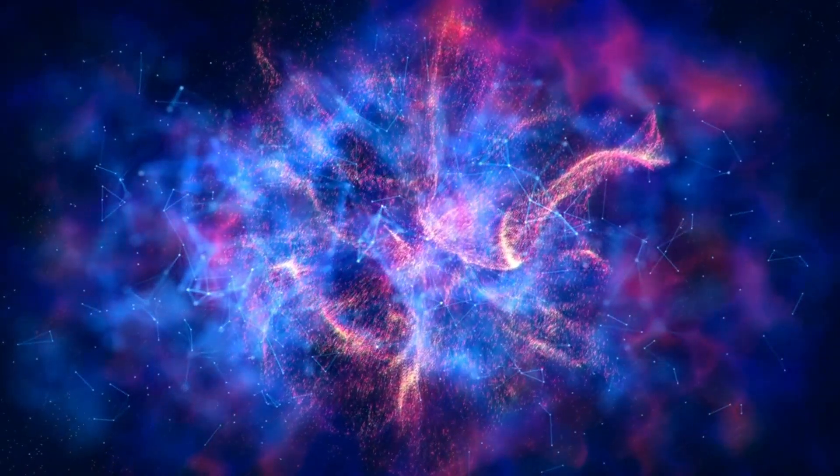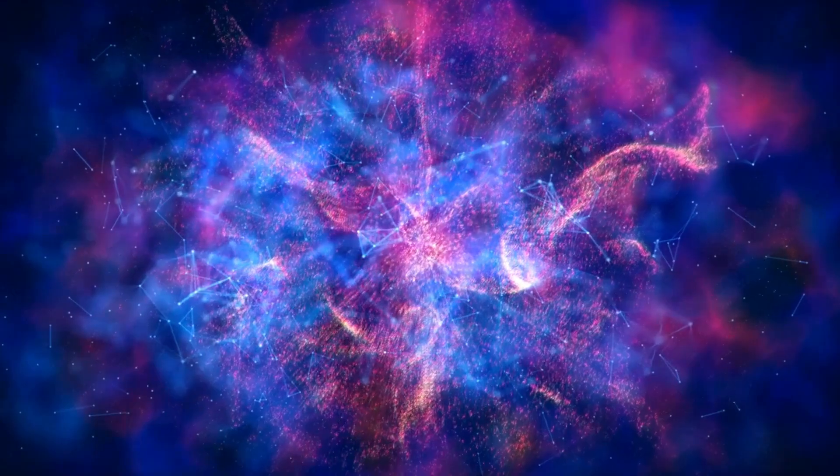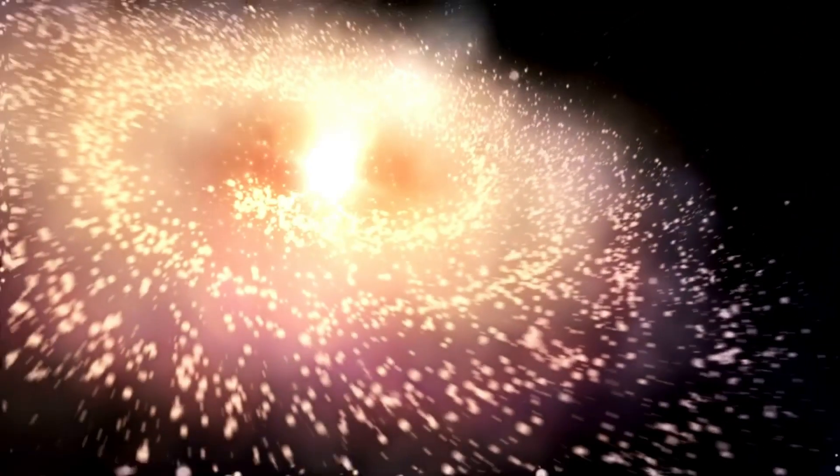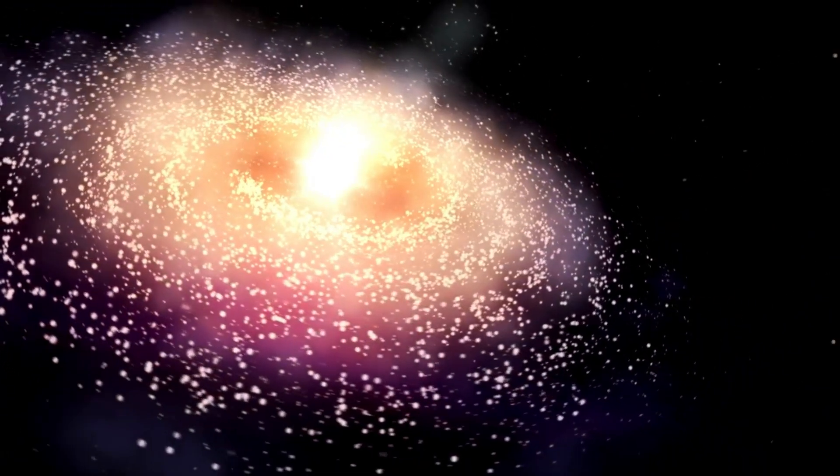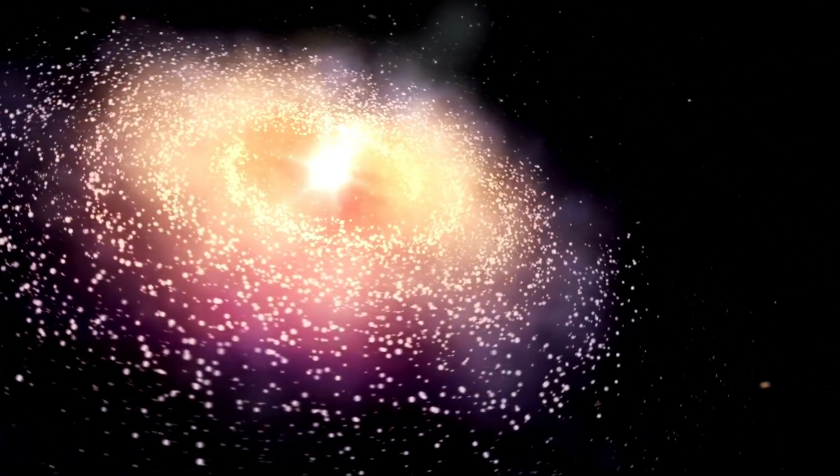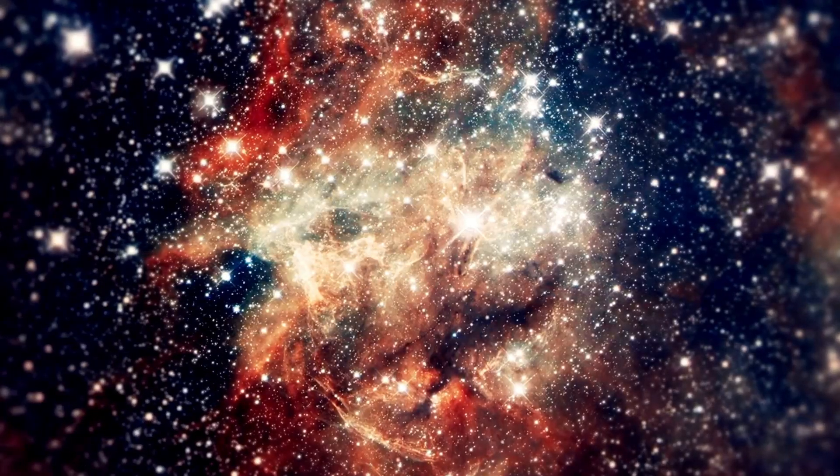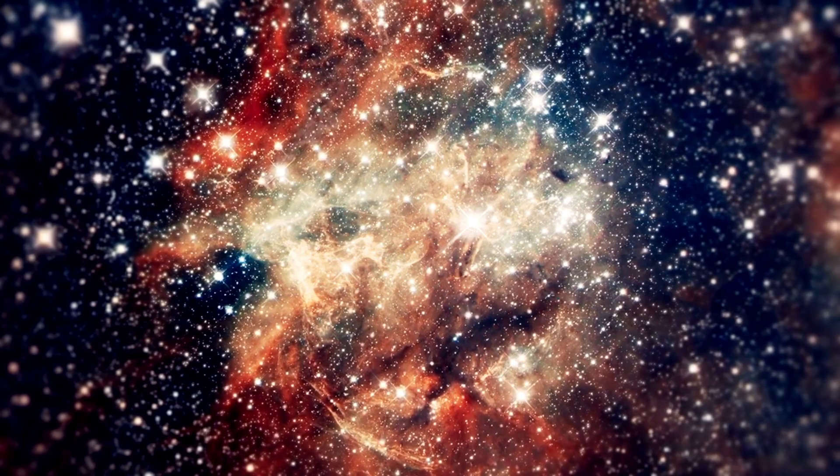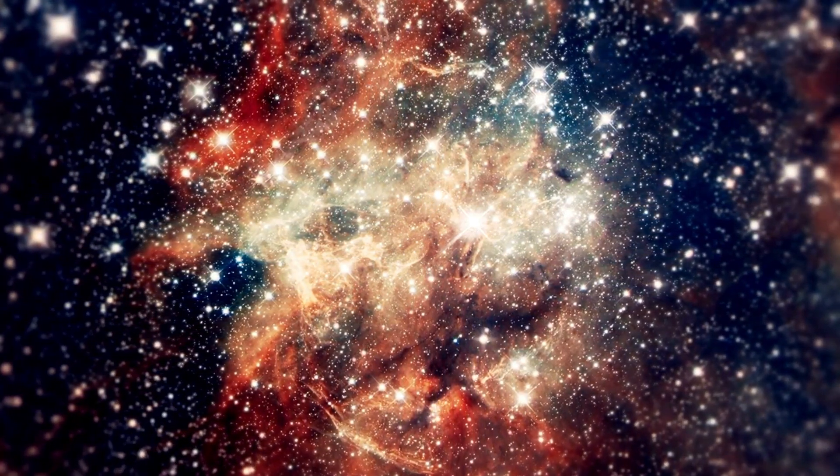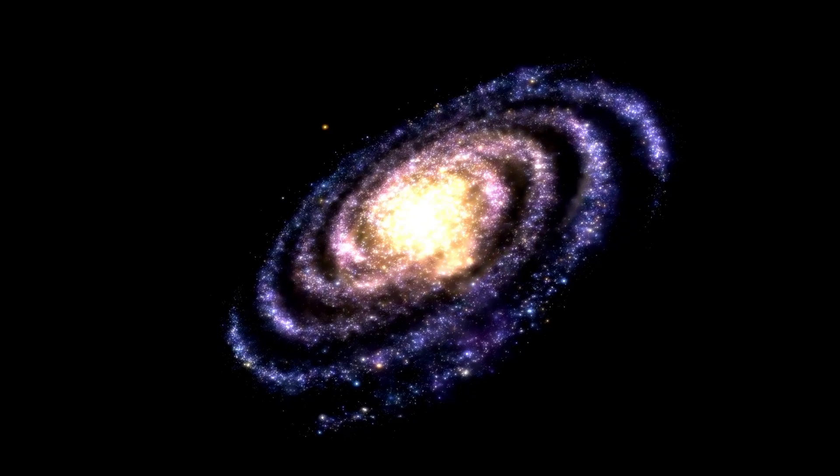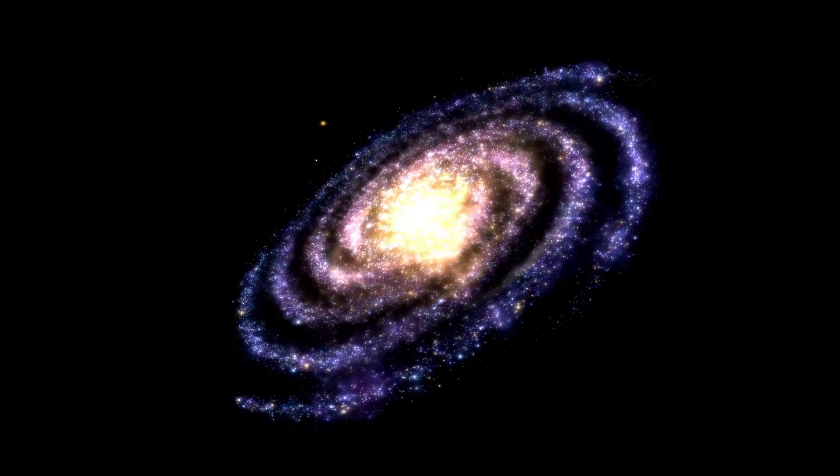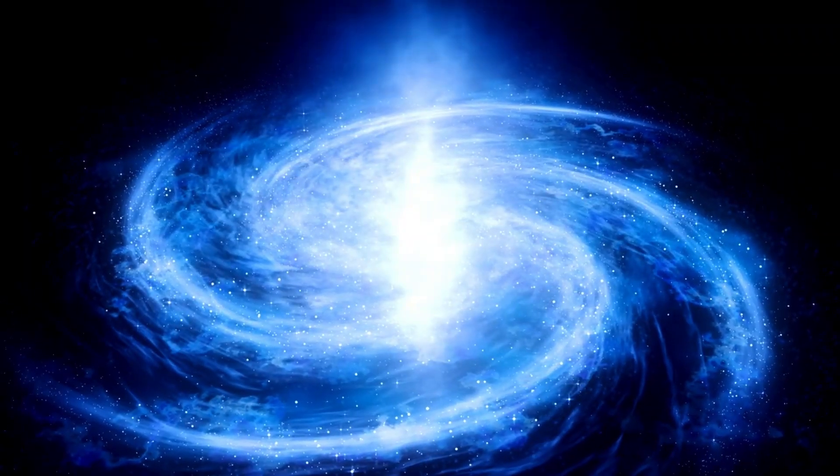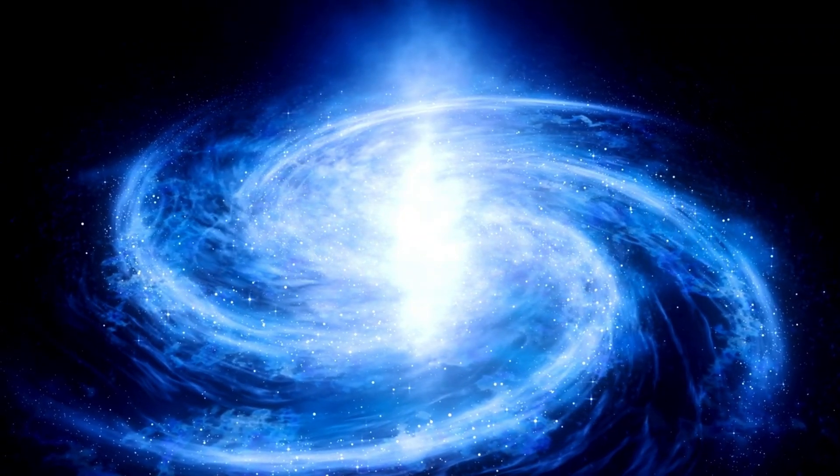However, besides the beautiful auroras, there are more concerning aspects of the Sun's magnetic inversion that could occur. If we are not prepared, something could happen, resulting in chaos worldwide. One of the most significant dangers associated with a magnetic field inversion is the increased likelihood of geomagnetic storms. These storms occur when solar wind, laden with charged particles, interacts with Earth's magnetic field. In extreme cases, they can cause widespread power outages and damage infrastructure.